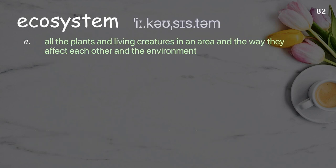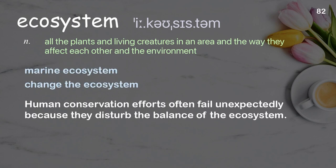Ecosystem. All the plants and living creatures in an area and the way they affect each other and the environment. Examples: marine ecosystem, change the ecosystem. Sentence: Human conservation efforts often fail unexpectedly because they disturb the balance of the ecosystem.